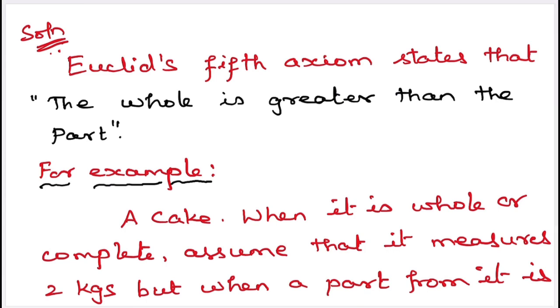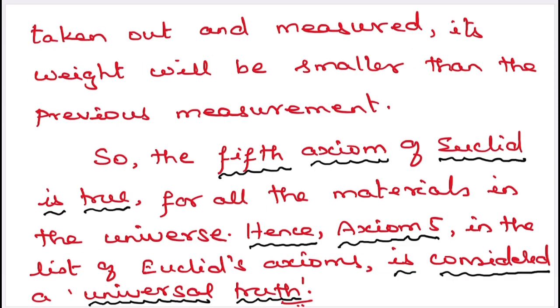So the fifth axiom of Euclid is true for all the materials in the universe. Hence, axiom 5 in the list of Euclid's axioms is considered a universal truth. Hope you understood this.